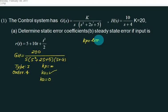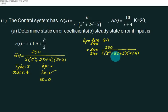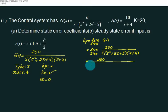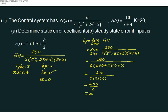Kv equals limit as s tends to 0 of s·GH. Write: equals limit s tends to 0 of 200. To solve any limit, first check whether s here can be cancelled or not. If you are not able to cancel, just put the value. So 200 upon 0·(0+0+5)·(0+4) — next term: write Kv. This is multiplied by s, so the solution changes from this step — s is cancelled out.